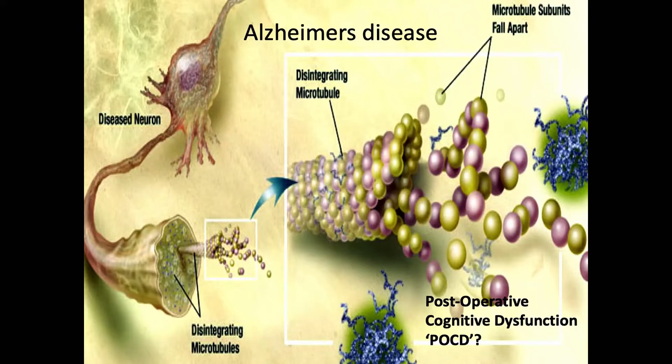When microtubules fall apart and tau falls off, we get Alzheimer's disease. Everybody knows about amyloid plaques, but the cognitive dysfunction correlates better with loss of microtubules, tau, and neurofibrillary tangles — when tau clumps in the corners of the cell and microtubules disassemble, the synapse is lost, the whole neuron shrivels up, and the whole brain atrophies and shrinks.